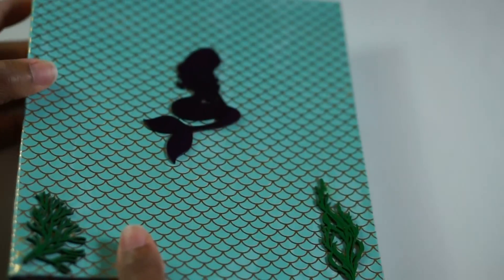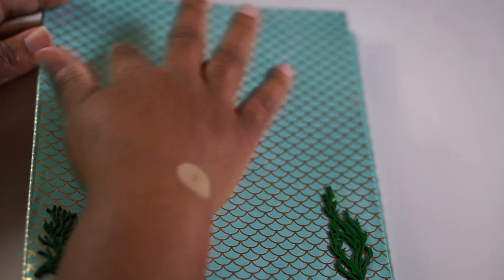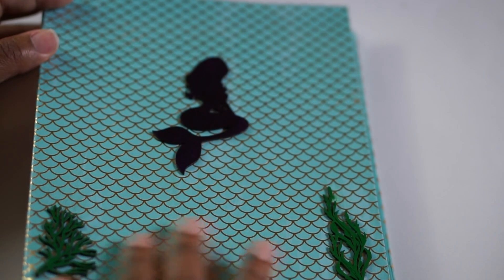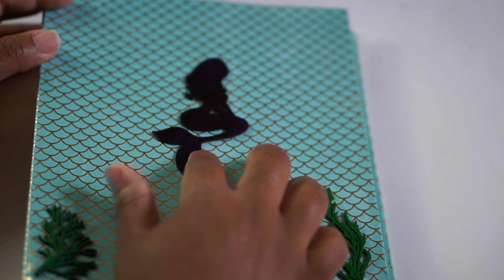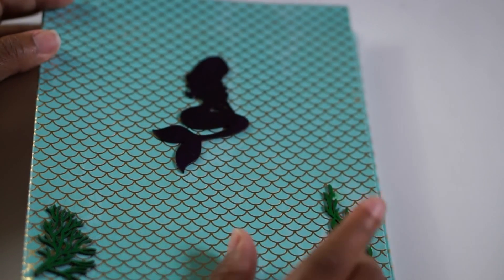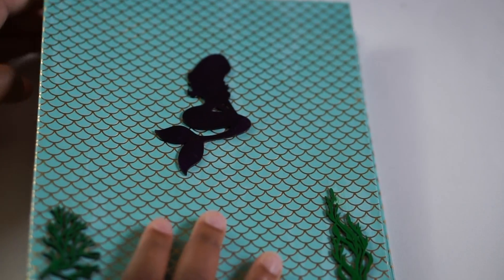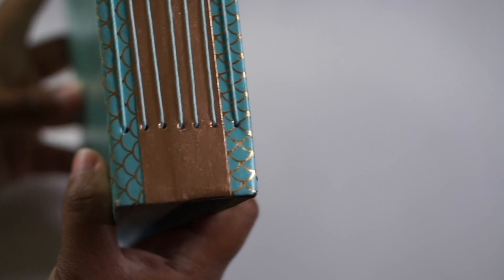And the last one that I have is actually a mermaid themed book. So, there's this one. I put some, like, I don't know. I thought this was, like, mermaid. It's gold. And then this is like a little mermaid chipboard. And then some seaweed that I colored green. And then this. And then that's the spine. And then that's the back.